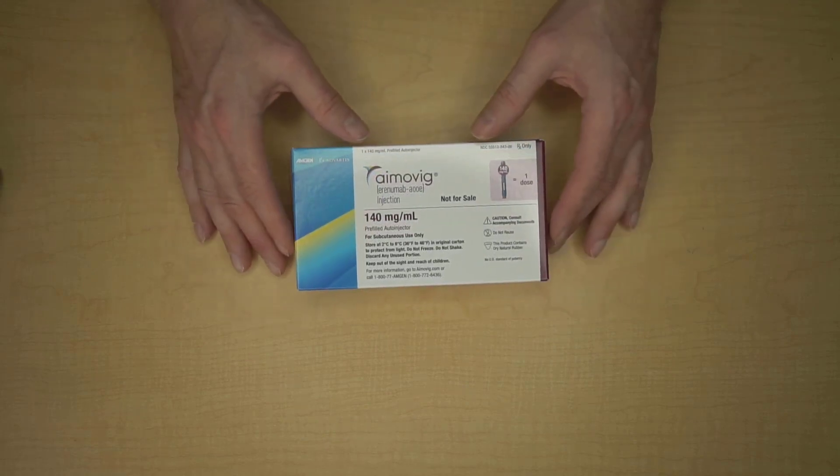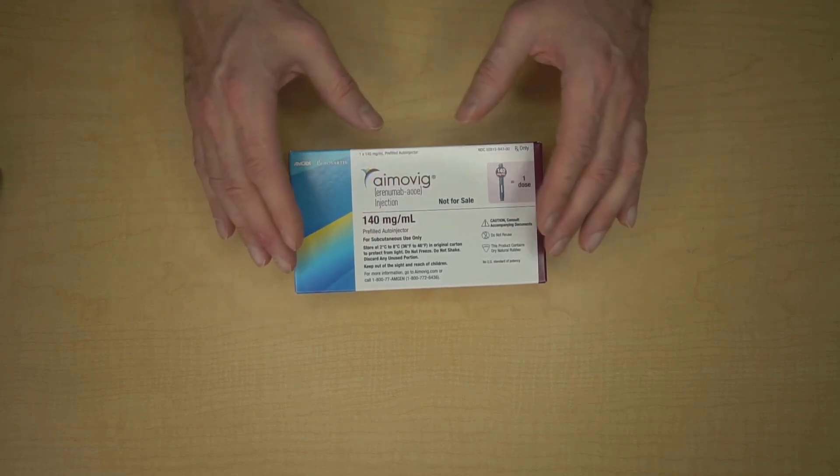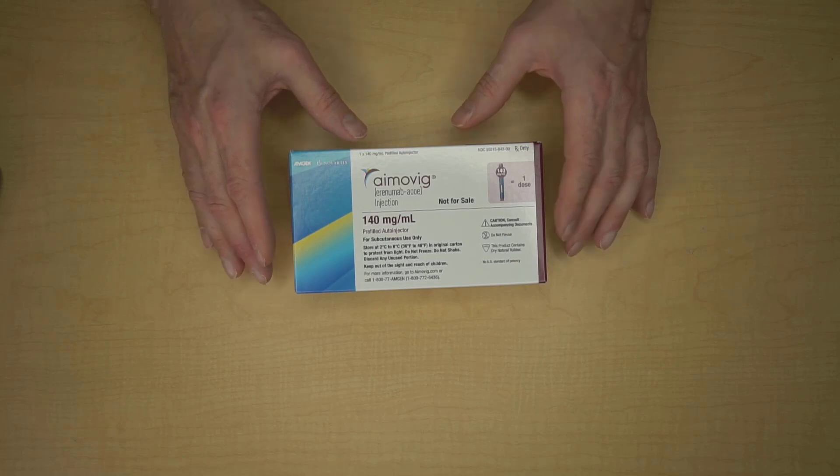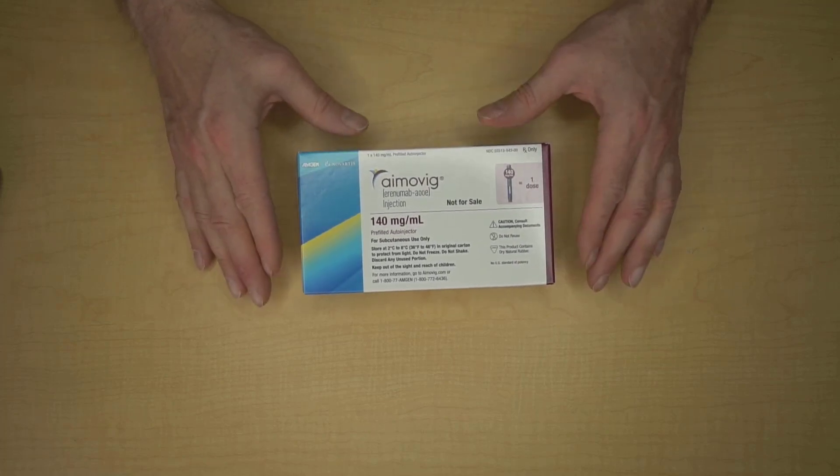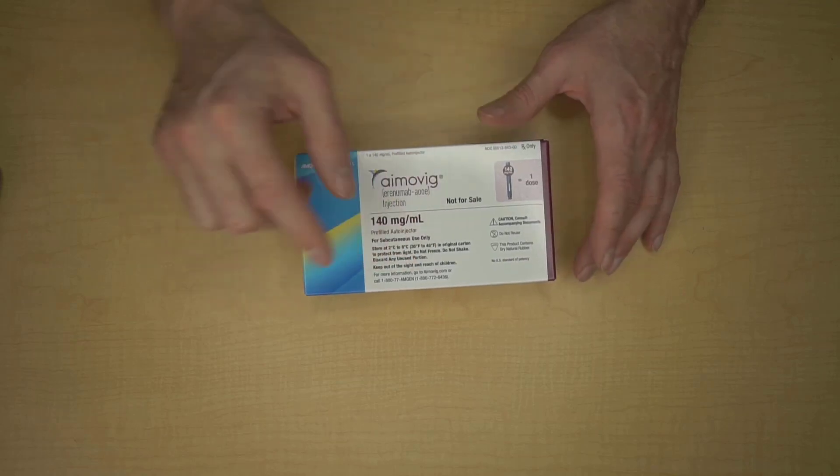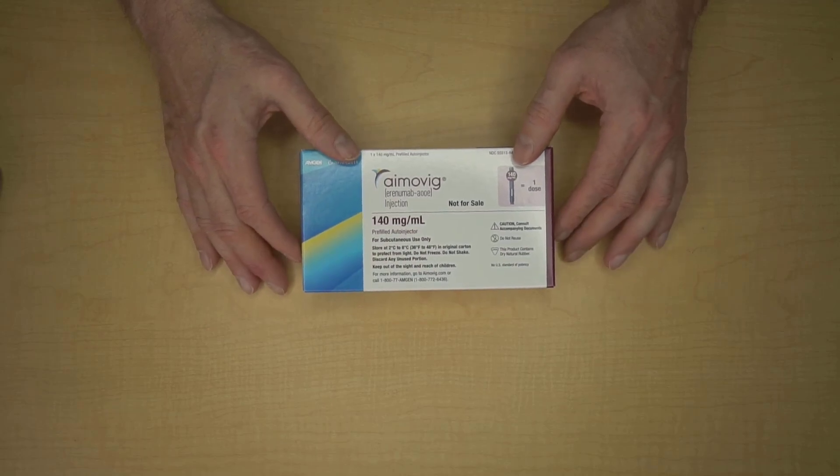So at this point Amovig has been out of the refrigerator and resting at room temperature for 30 minutes, and that's probably the biggest thing that you can do to make sure that your Amovig injection is comfortable. Don't shake it. Don't drop it on the floor. If you think that you've damaged your injector, all you have to do is call Amgen and discuss it with them, and generally they can arrange a replacement for you.